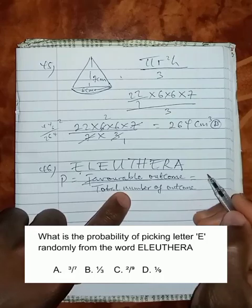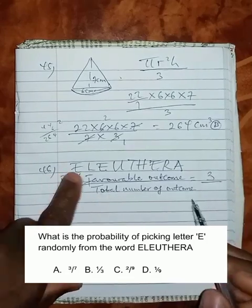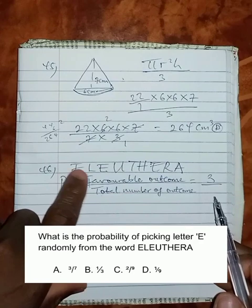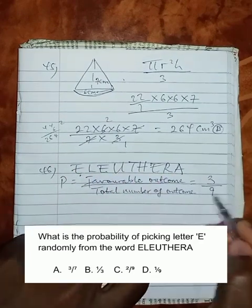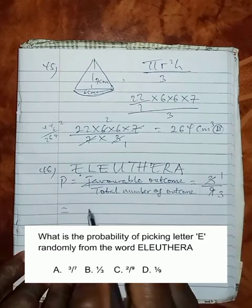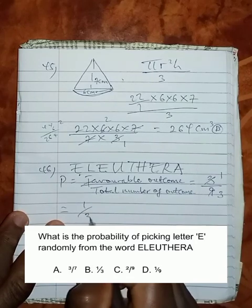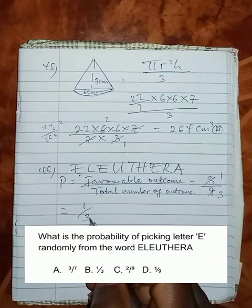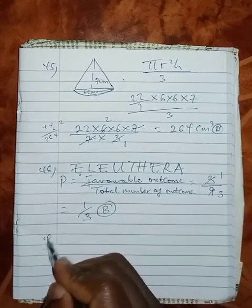It says probability of picking the letter E. How many E's are in the letter? Let's count: 1, 2, 3. That's 3 over total number of outcome is the total letters here: 1, 2, 3, 4, 5, 6, 7, 8, 9. If I reduce this, 3 here 1, 3 here 3, the probability of picking the letter E randomly will be 1 over 3, which is option B.